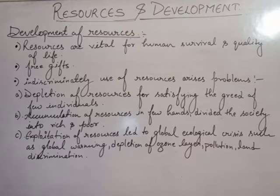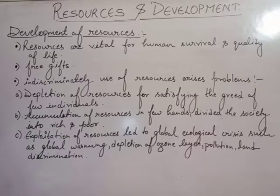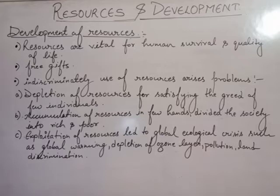This is the problem of the government. The government has some policies, but greedy people do not follow them. The second problem is the accumulation of resources in few hands, which divides society into rich and poor. If resources go to only a few hands, the society is divided into two segments — the rich and the poor. The third problem is the exploitation of resources, which has led to a global ecological crisis such as global warming, depletion of the ozone layer, pollution, and land degradation.